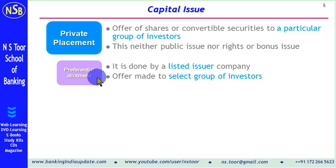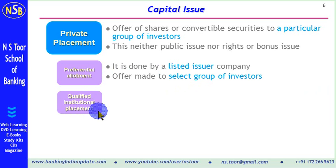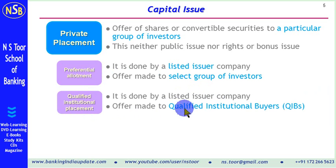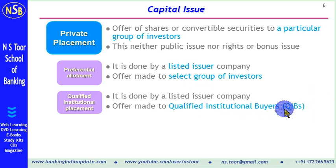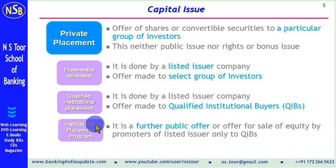The second variant is qualified institutional placement, which is again done by a listed company only. Here, the offer is made to qualified institutional buyers. This group includes banks, mutual funds, financial institutions, and similar entities. The third variant is the institutional placement program. Under this program, it is a further public offer or offer for sale of equity by promoters of listed issuers, made only to qualified institutional buyers.